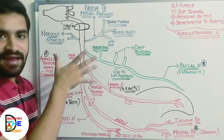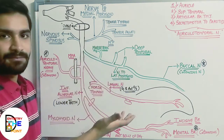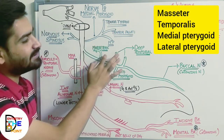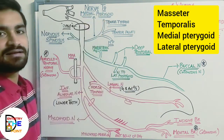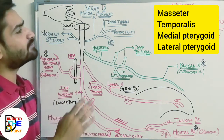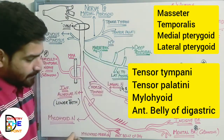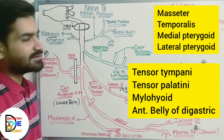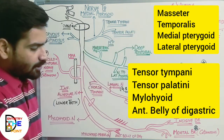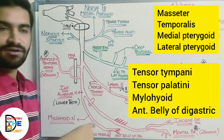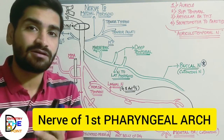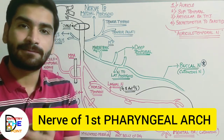In summary, the mandibular nerve supplies eight muscles in total. The first four are the muscles of mastication: masseter, temporalis (via deep temporal), lateral pterygoid, and medial pterygoid. The remaining four muscles supplied by the mandibular nerve are: tensor tympani, tensor palatine, mylohyoid, and the anterior belly of digastric. This is an important point to remember — which eight muscles are supplied by the mandibular nerve.